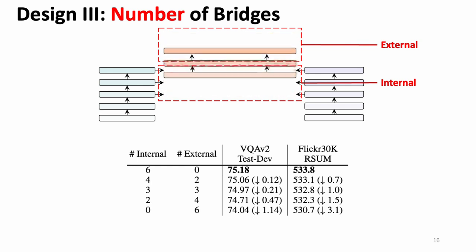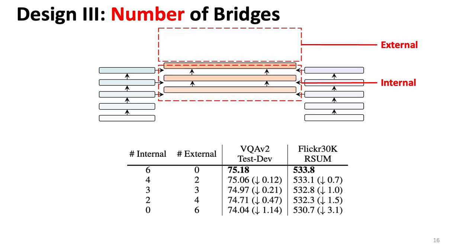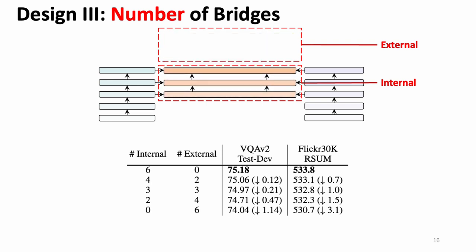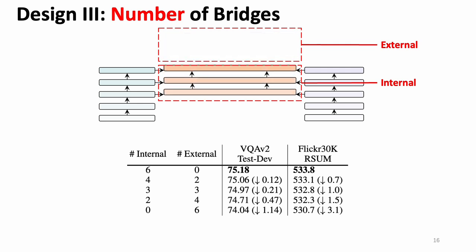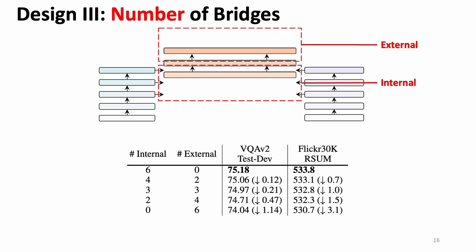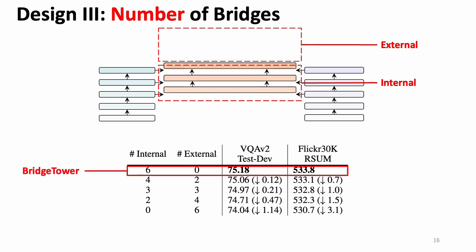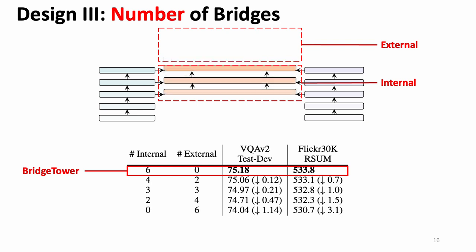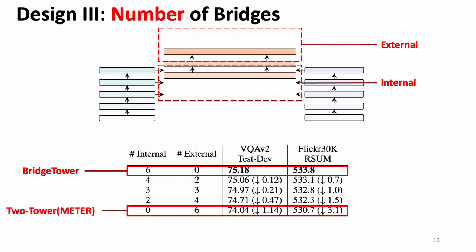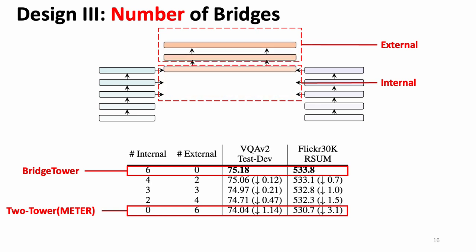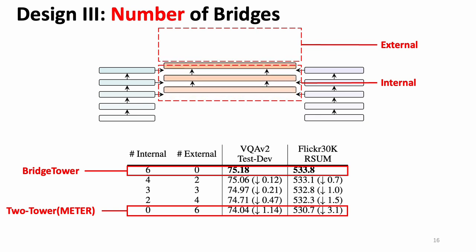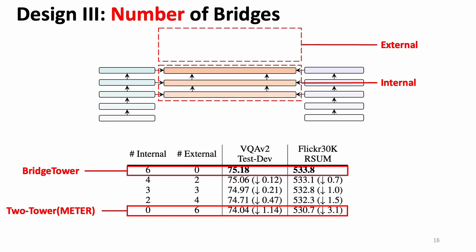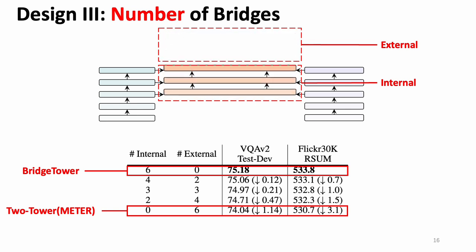To fully compare the effectiveness of two-tower and Bridge Tower, we try to establish a setting that progressively changes from Bridge Tower to two-tower. To make a fair comparison, we use a sum of six cross-modal layers and arrange them into an external part and an internal part. The internal layer has bridge layers; the external layer does not. The first row shows Bridge Tower, where all six layers are internal. Then we gradually increase external layers and decrease internal layers. We found a stable drop in performance, and finally the last row shows the two-tower architectural METER model, which has the lowest performance. This demonstrates that the bridge layers of Bridge Tower, which connect the top layers of unimodal encoders with each layer of the cross-modal encoder, can significantly improve performance.